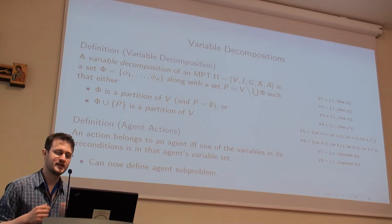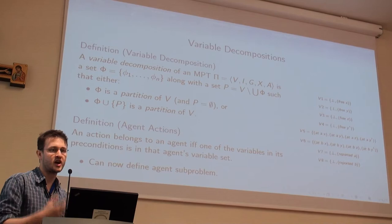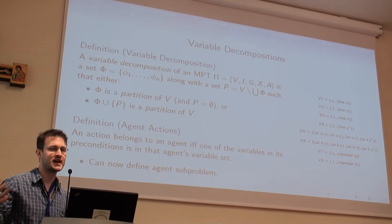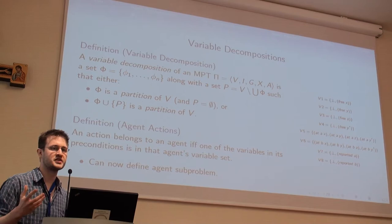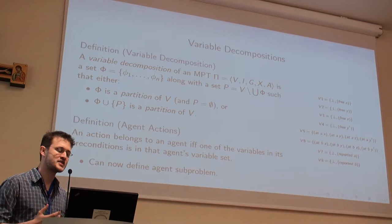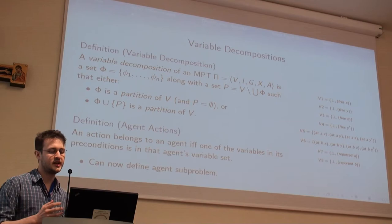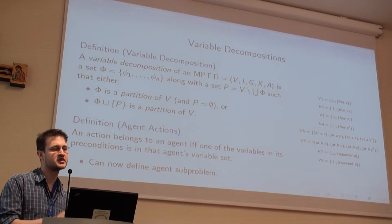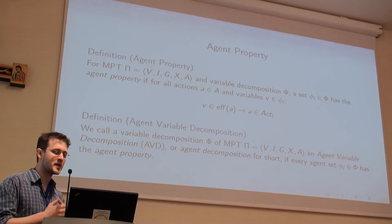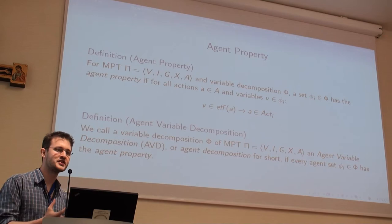To make that more formal: a variable decomposition is just a partitioning of the variable set, but one of those partition sets will be the environment that the agents are acting in. Given a partitioning, we can assign actions to each agent by giving an action to an agent if its preconditions contain a variable belonging to that agent. Once we've done this, we can define an agent subproblem — the full problem but reduced to only contain the public and environment variables plus the variables belonging to that particular agent.